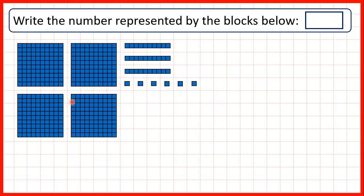Here we have four as our hundreds digit, three as our tens digit, and six as our ones digit. So that's four hundred and thirty-six. Notice it's always the ones digit on the end, then the tens digit before that, and then because we're writing three-digit numbers, we have the hundreds digit before that.